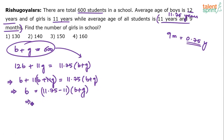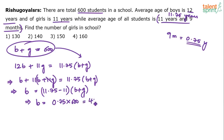Substituting, b equals 11.75 minus 11 times (b plus g). With b plus g equal to 600, 0.75 times 600 is 450. So number of boys is 450, and number of girls is 600 minus 450, which is 150. The answer is 150 girls.